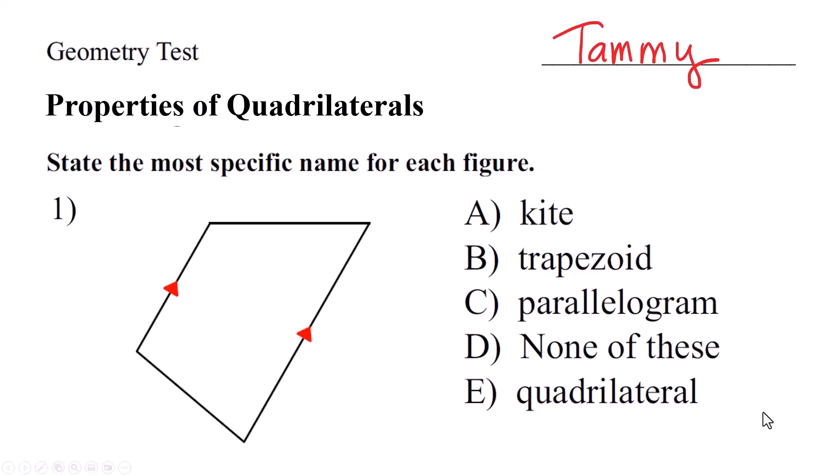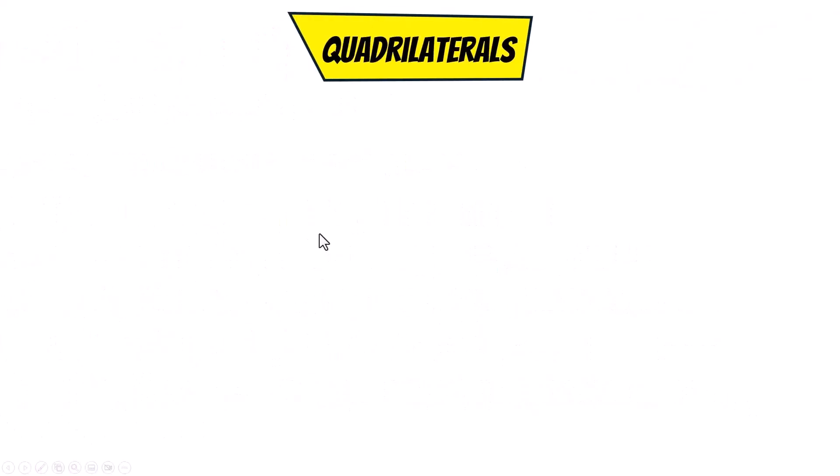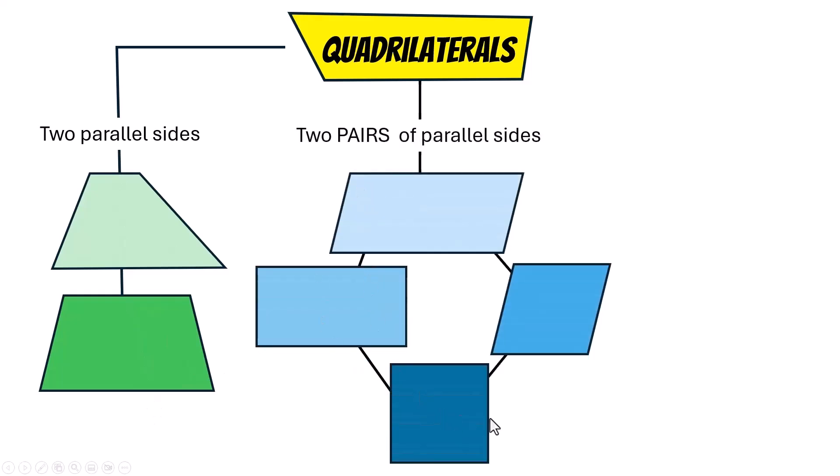What is the name of this figure? If you know it, great. If you don't know it, let's review real quick. Quadrilaterals can be sorted out based on how many parallel sides they have. These two have just one pair of parallel sides. All these have two pairs of parallel sides and this little guy has no parallel sides.